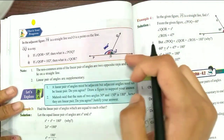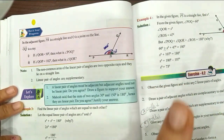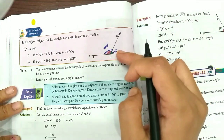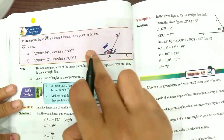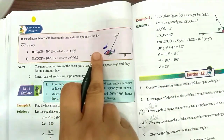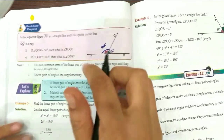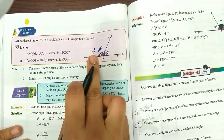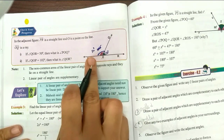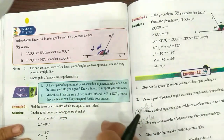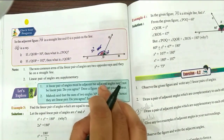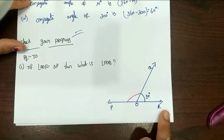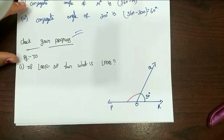Here you can confirm that the straight line gives 180 degrees. Now you have angle QOR equal to 50 degrees on this side, so this side is 180 minus 50 equals 130 degrees. Angle POQ is 130 degrees.